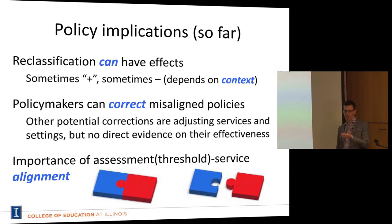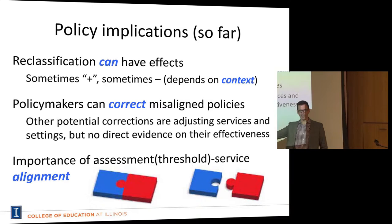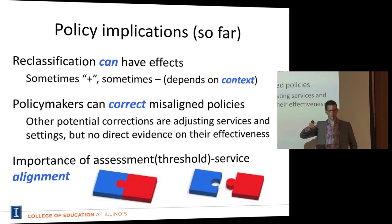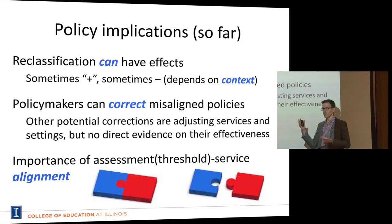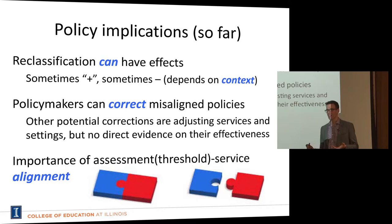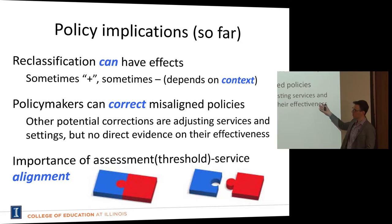Second, this paper suggests policymakers can correct misaligned policies. They thought criteria were too low, raised them, and we went from negative effects to null effects of reclassification. It's not guaranteed they would hit null — they could have overshot or undershot — but the policy change plausibly induced this effect and removed the negative effects we were seeing. It's also possible to achieve this through programmatic changes or changes in expectations and instruction, not only through policy changes.